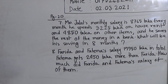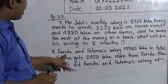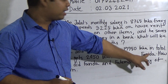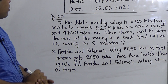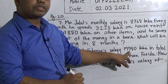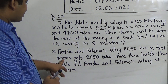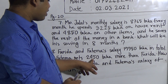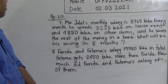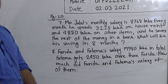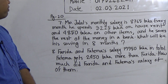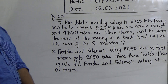My dear student, first of all we read the question. Forida and Fatima's salary is 19,950 Taka in total. That means the total monthly salary of Forida and Fatima is 19,950 Taka. Fatima gets 2,450 Taka more than Forida. How much is each of their individual salaries? We need to find out the separate salary of Forida and Fatima using these two pieces of information.